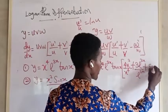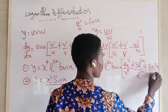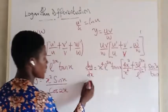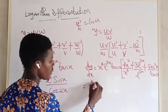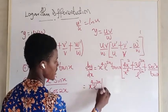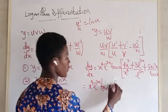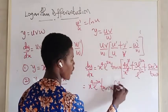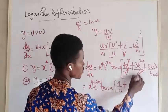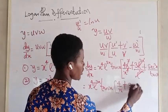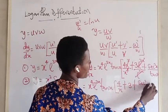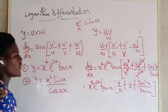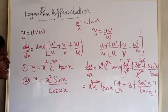If you differentiate tan x you get sec²x, so we write plus sec²x over tan x. This now becomes x⁴ · e^(3x) · tan(x), times the bracket: 4 over x, plus 3, plus sec²x over tan x. So this will be the final answer for our first question.